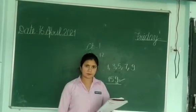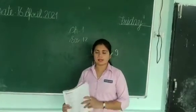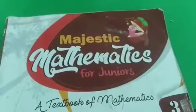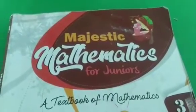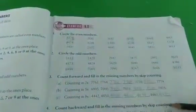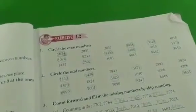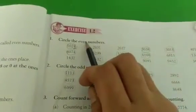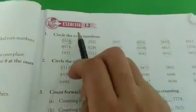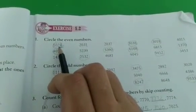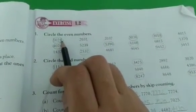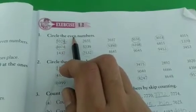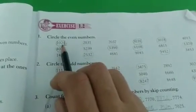So let's start exercise 1.2. Open your maths book — exercise 1.2. Let's start. Circle the even numbers. We have to circle the even numbers. 1024: at the ones place there is 4. 4 is an even number — circle it.